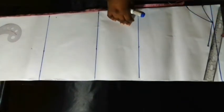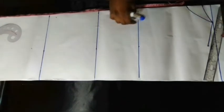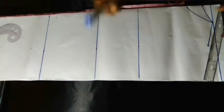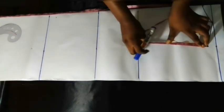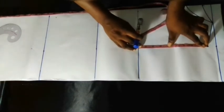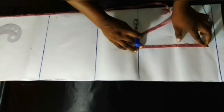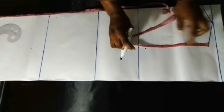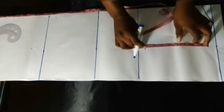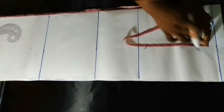Next I'm going to create my armhole curve. To create my armhole curve I'll need my armhole depth. To get your armhole depth you have to divide your armhole measurement by 2. My armhole measurement is 16 inches, so 16 divided by 2 gives you 8 inches. I'm going to connect this point to those points.